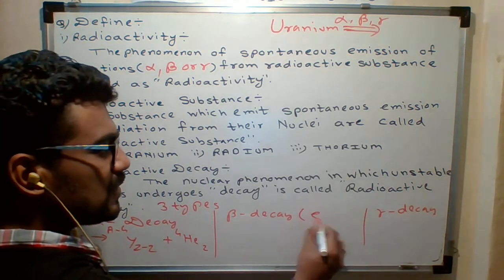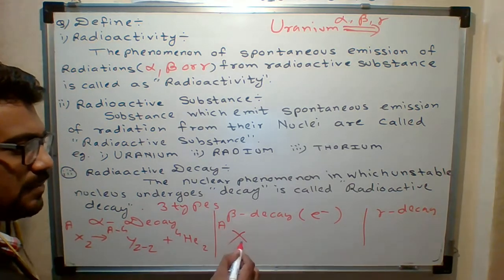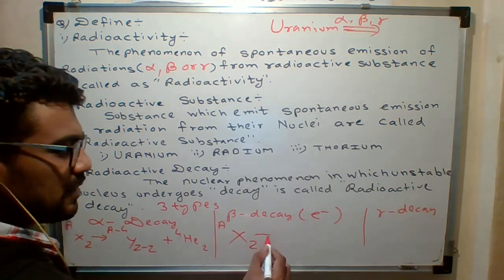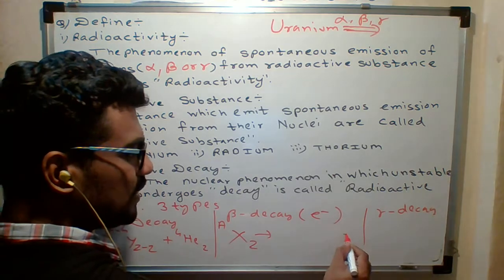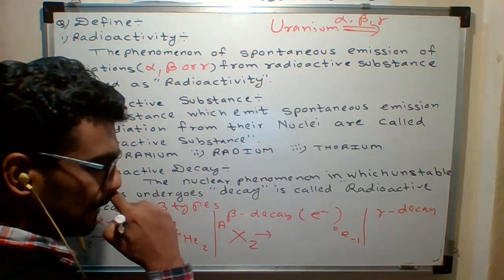Beta means it's an electron. Suppose this is the parent element having atomic mass number A, atomic number Z. When beta, beta means electron, electron having charge minus 1, zero.